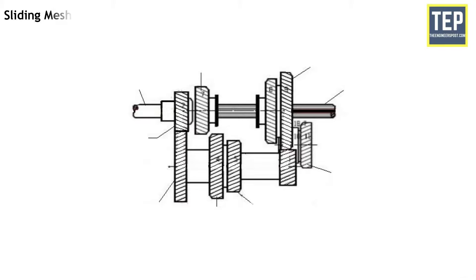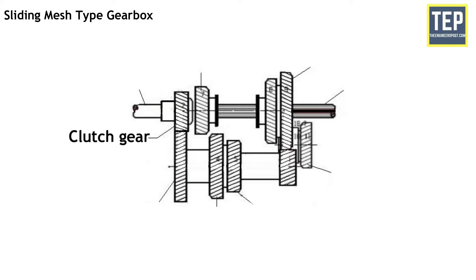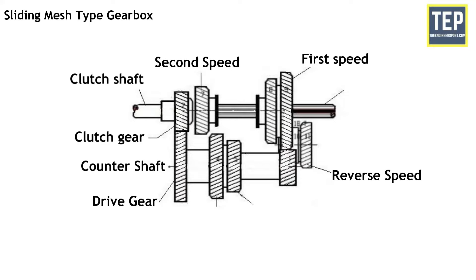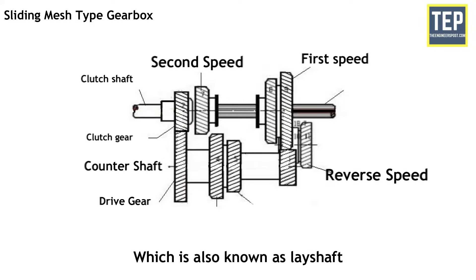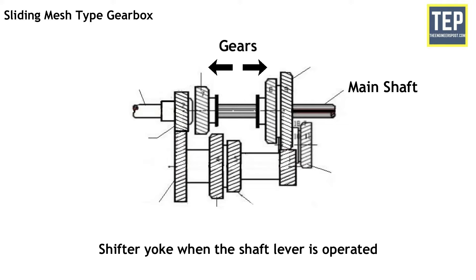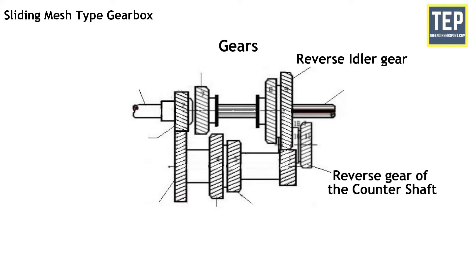It is the simplest type of gearbox. The arrangement of gears is in a neutral position. The clutch gear is fixed to the clutch shaft and remains always connected to the drive gear of the counter shaft. The gears of first speed, second speed, and reverse speed are also rigidly fixed to the counter shaft, also known as the lay shaft. Two gears mounted on the splined main shaft can be slid by the shifter yoke when the gear shift lever is operated. A reverse idler gear is fixed on another shaft and remains connected to the reverse gear of the counter shaft.